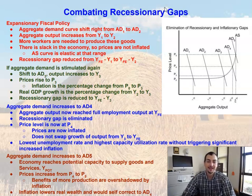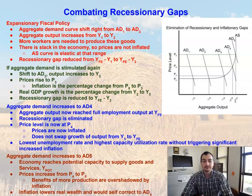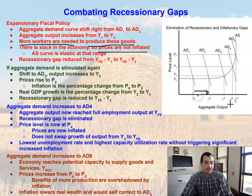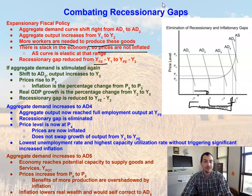So by employing this expansionary fiscal policy and shifting from AD1 to AD2, we're increasing output. Because we're increasing output, we need more workers to produce these goods, and we're able to do this without inflating prices. This is basically a win-win — we can produce more, get more people working, but prices aren't going up. We're doing this to reduce that recessionary gap, reducing it from YFE minus Y1 down to a smaller gap.